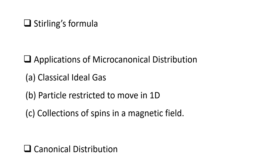Let us give a brief introduction to what will be done in today's class. We will do Stirling's formula and applications of the microcanonical distribution, particularly the classical ideal gas. We will also do a particle restricted to move in a 1D box, a collection of spins in a magnetic field, and very importantly, the canonical distribution — the derivation of the probability for our system to occupy a particular energy state.